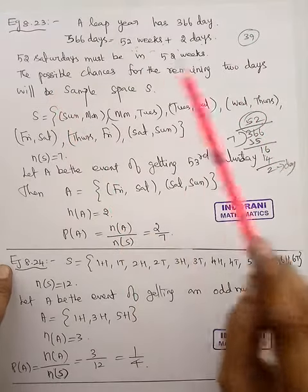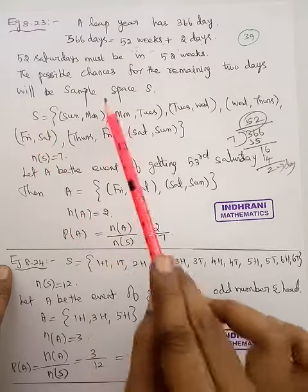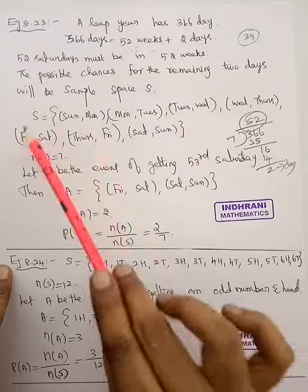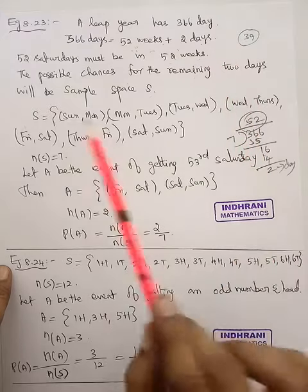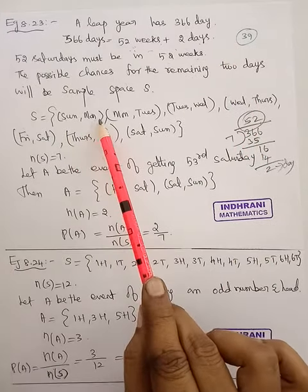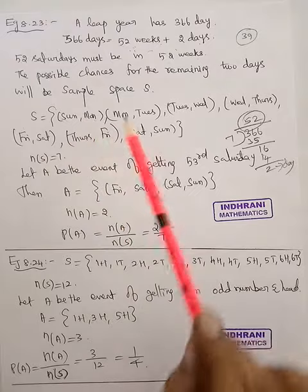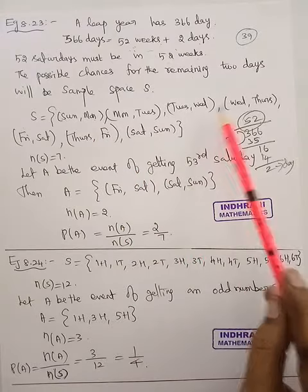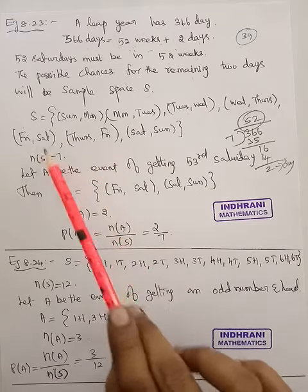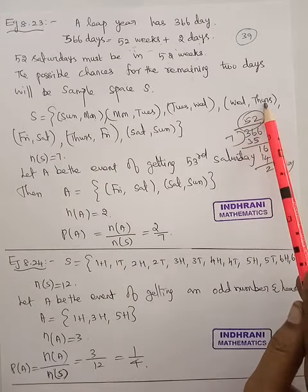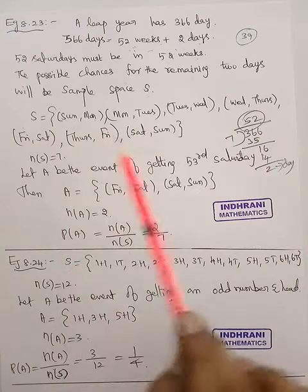So the possible chances for remaining 2 days will be sample space yes. Appna sample space yes ingaradhi, in the possible chances for 2 days. Ennan mada chances sunday monday. 2-3 nal varununa continues sunday monday. Monday Tuesday, Tuesday Wednesday, Wednesday Thursday, Thursday Friday. Thursday Friday, Wednesday Thursday Thursday. Thursday Friday, Friday Saturday, Saturday Sunday.